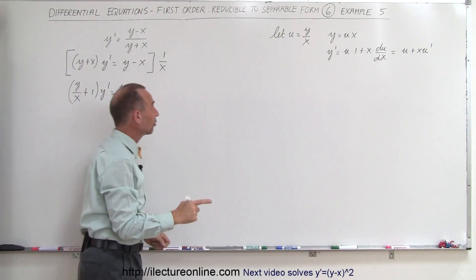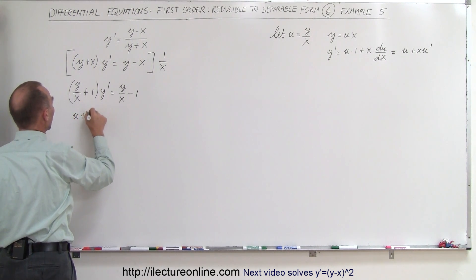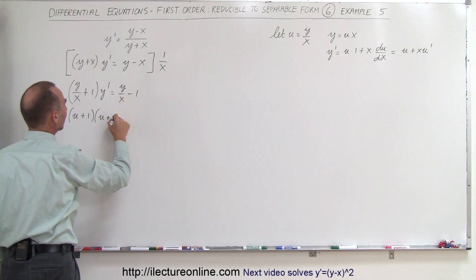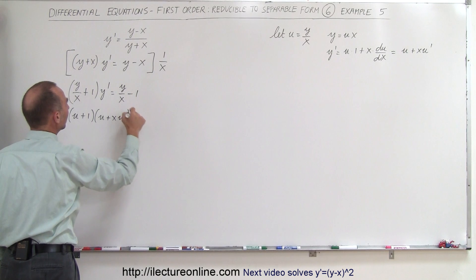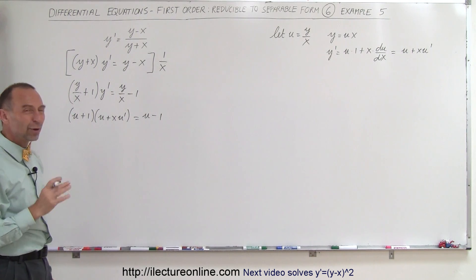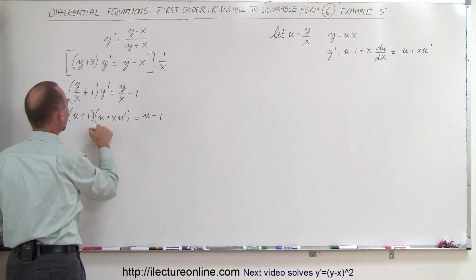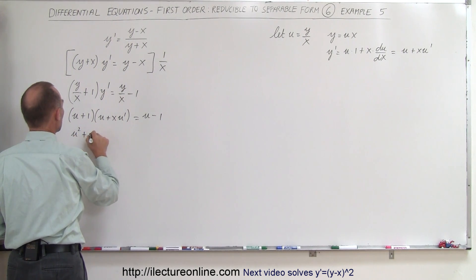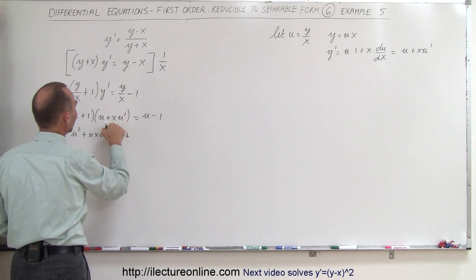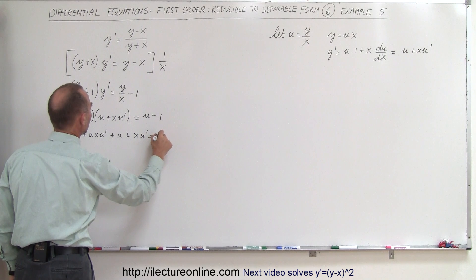When we take that and substitute back in, letting y over x be u, this becomes u plus 1. And y prime becomes the quantity u plus x times u prime, equal to u minus 1 on the right side. Multiplying out, we get u squared plus u times x times u prime plus u plus 1 times x times u prime, which is equal to u minus 1.